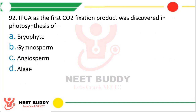Question number 92. 3-PGA as the first carbon dioxide fixation product was discovered in photosynthesis of: bryophytes, gymnosperms, angiosperms, or algae? The correct answer is option D — algae.